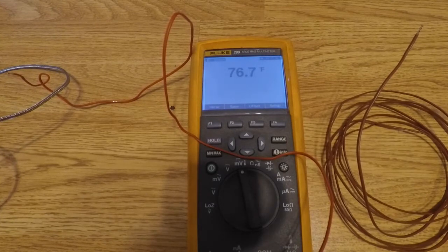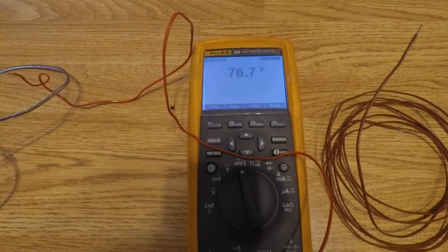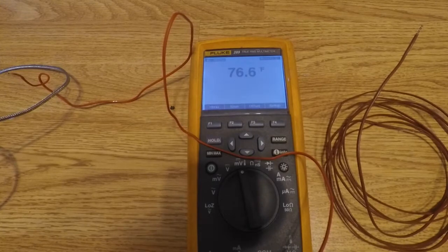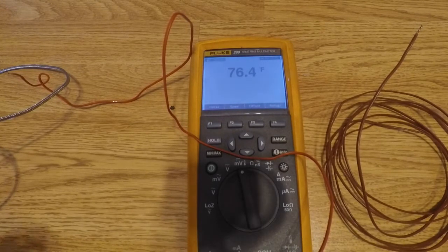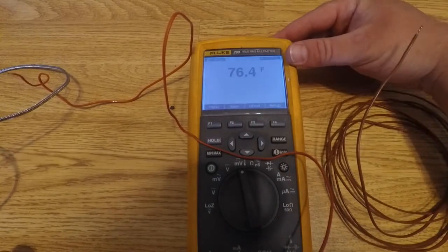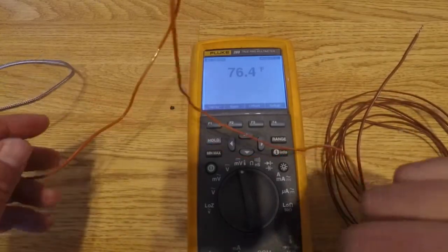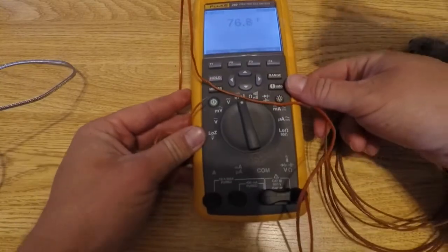The first thing to understand about thermocouples is that you need something that has a cold junction reference in order to read them. Right now we can see my multimeter showing about 76 degrees. This is the thermocouple that comes with it.